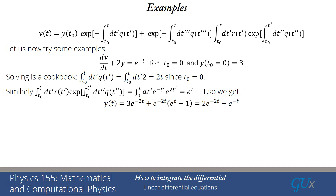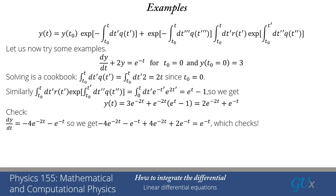Let's check: when t equals 0, I get 2 plus 1 equals 3 — correct. Taking the derivative gives minus 4e^(−2t) minus e^(−t). The differential equation says take that derivative and add 2 times y, which adds 4e^(−2t) plus 2e^(−t). The e^(−2t) terms cancel, and one of the e^(−t) terms cancels, leaving e^(−t). Indeed, that's r. So it checks — we've solved our second example.